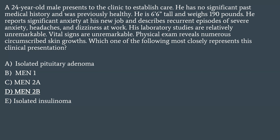The answer is MEN2B. Look for the distinguishing features: marfanoid habitus — a common hint is an abnormally tall person relative to standard exam patients — in addition to the numerous circumscribed skin growths describing mucosal neuromas. That alone could have gotten you this question right. In addition, they gave you recurrent episodes of severe headache, anxiety, and dizziness — a classic presentation of pheochromocytoma.